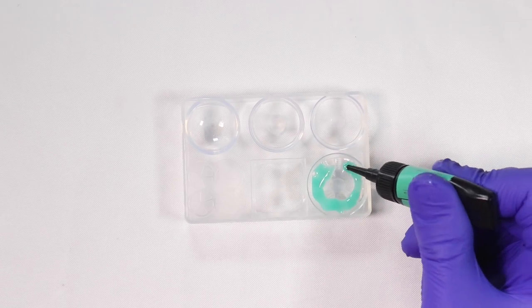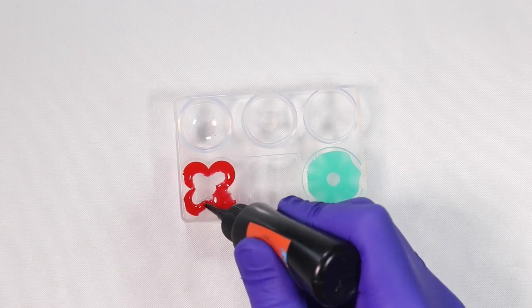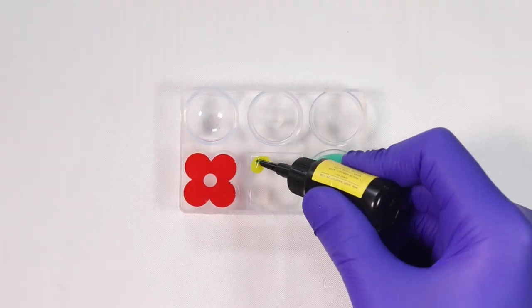So I'm using the colored opaque UV resin for the lettuce, the tomato, and the cheese. And letting that cure, this will be for my burger.